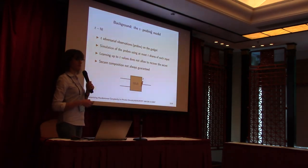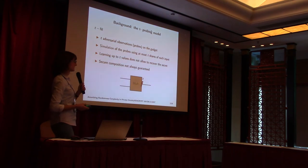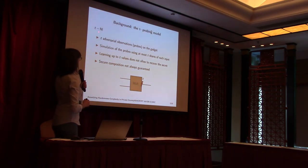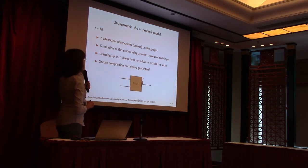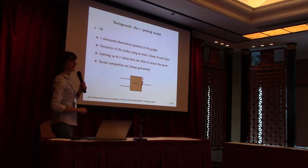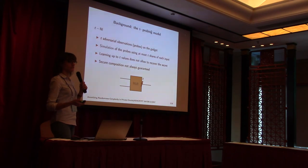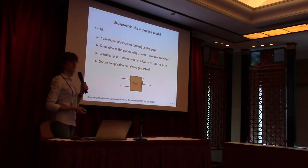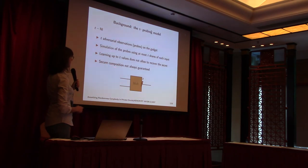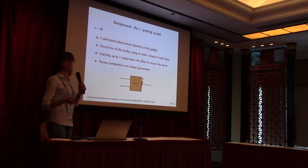I'll give you more detail on some background about the T-probing model. In particular, two are the main properties that we should satisfy. The first is TNI — T non-interference — where the adversary can observe up to T probes on a gadget. In order to show that the gadget is TNI, we have to show the existence of a simulator which simulates the adversary's view with only up to T shares of each input. The drawback of this definition is that it doesn't give any guarantee on the secure composition of this gadget.